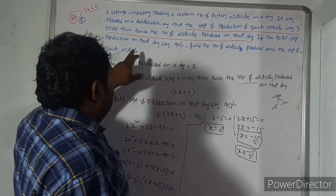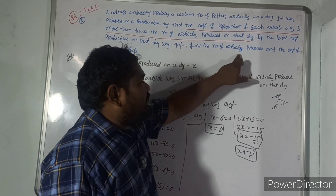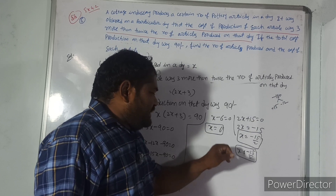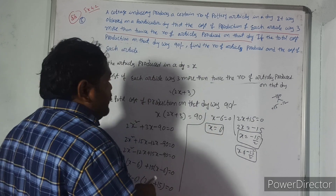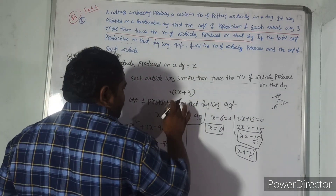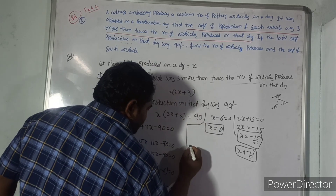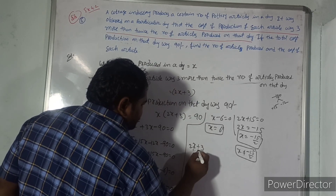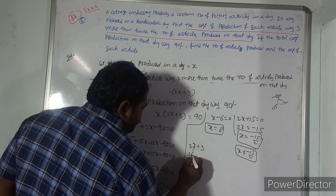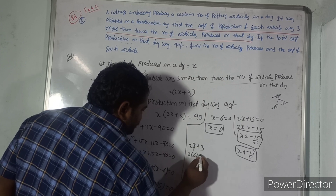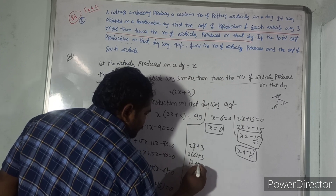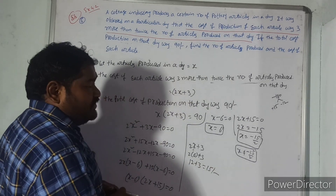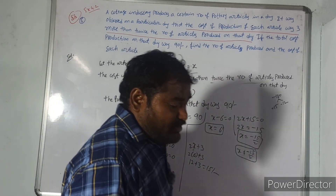Therefore, the number of articles produced is 6. The cost of each article is 2x plus 3, which equals 2 into 6 plus 3, equals 12 plus 3, equal to 15 rupees each. Okay, take a look.